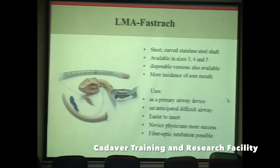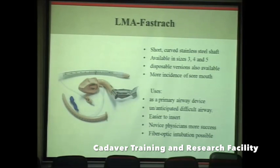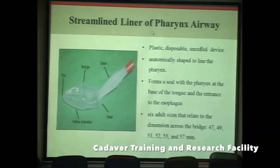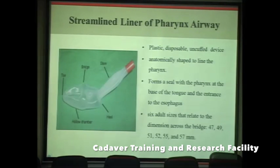The FastTrack has a higher incidence of sore throat due to greater bulk and cuff pressure. It may be used as a primary airway device or for an unanticipated difficult airway, though there are higher chances of dislodgement with head and neck movement. Fiber optic intubation is also possible through it. The streamlined liner of the pharynx airway (SLIPA) belongs to the first generation; it is a plastic, disposable, uncuffed device anatomically shaped to line the pharynx, with three parts: the toe, the bridge, and the stem. Six adult sizes are available, but choosing the correct size can be difficult.